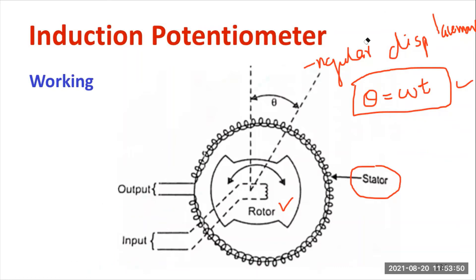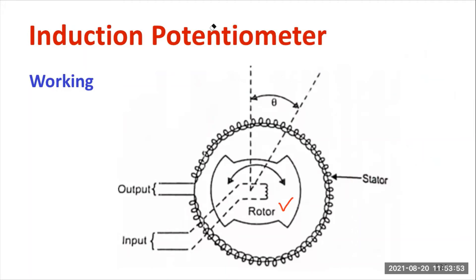Now let me explain how the induction potentiometer operates. The basic working principle is Faraday's laws of electromagnetic induction. First, we provide excitation supply — for example, 0 to 60 volt — to the rotor winding. The rotor is directly connected to the shaft, so as the shaft rotates, the rotor also starts rotating. When supply is provided to the rotor, the rotor winding gets energized and a magnetic field is generated.